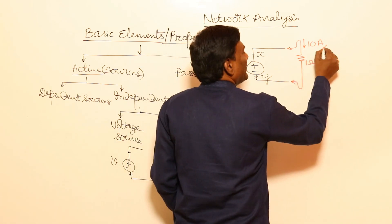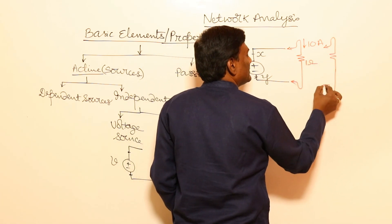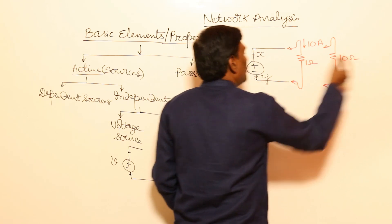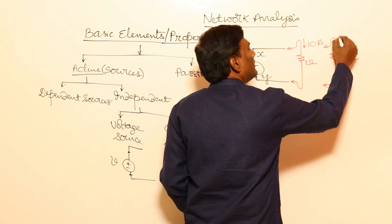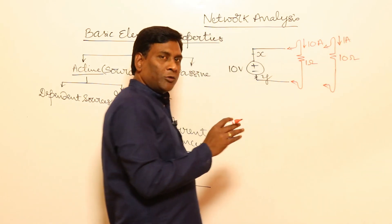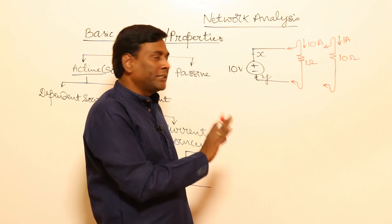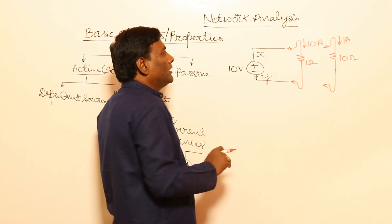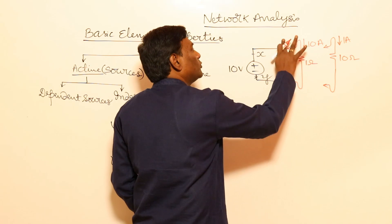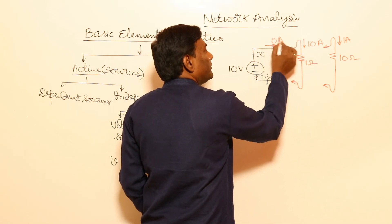If I connect a resistance of 10 ohms, how much current will go? 10 divided by 10 — 1 ampere current will go. For example, if the circuit is open-circuited, how much current will flow? 0 amperes current will flow.